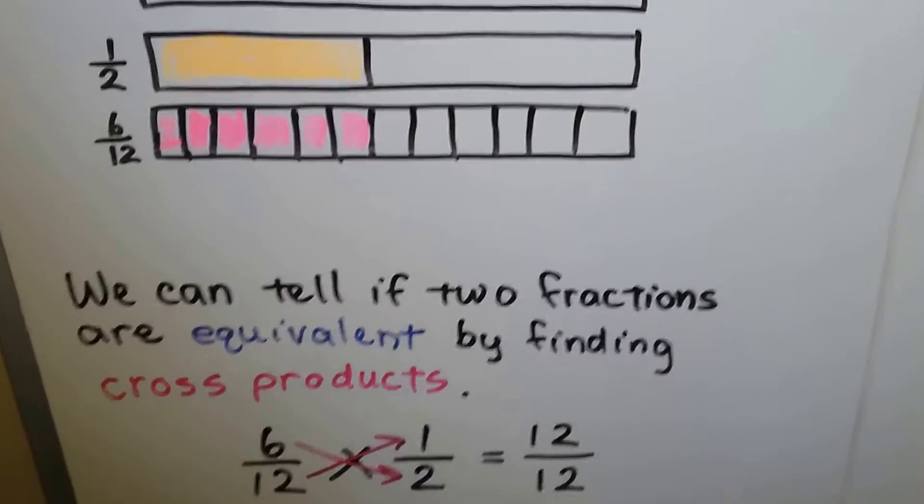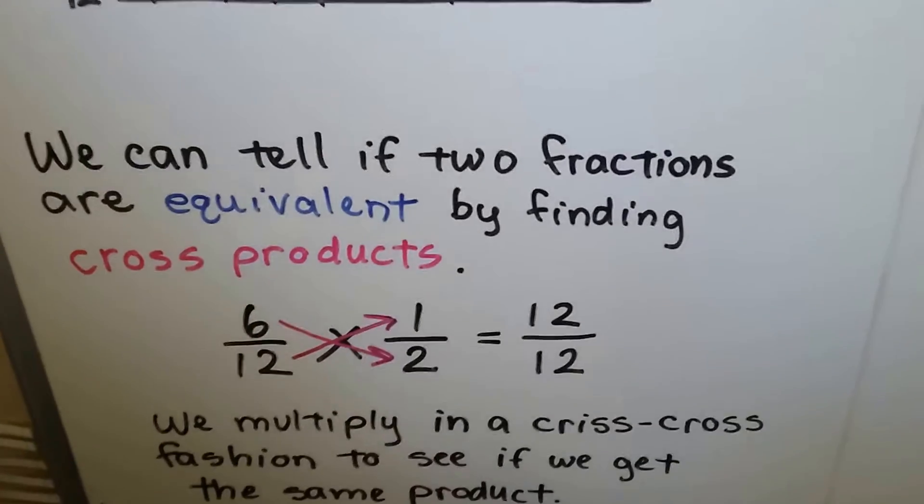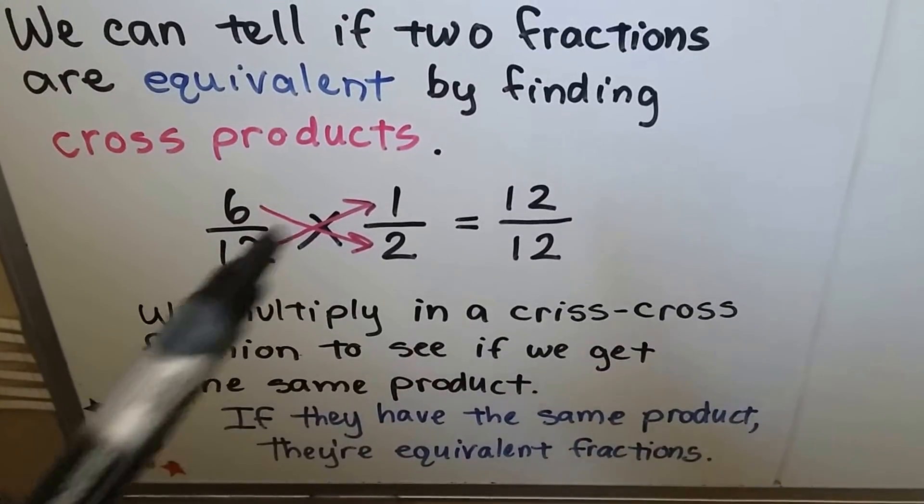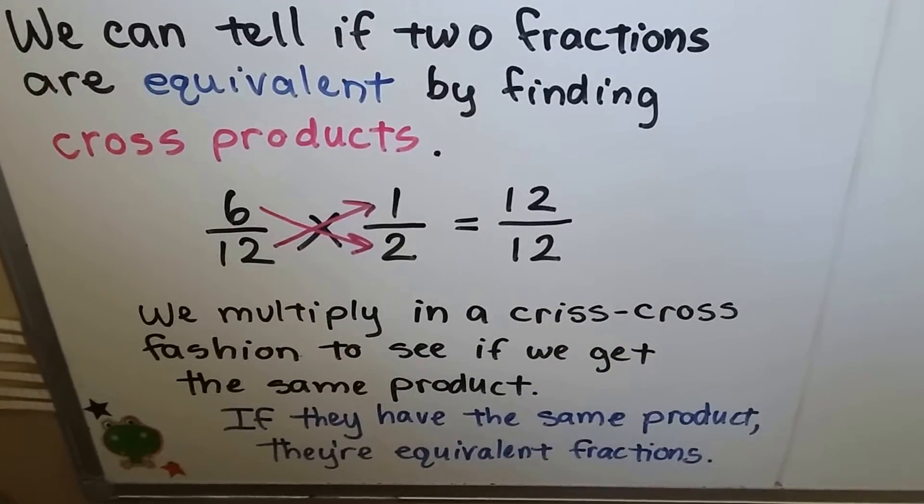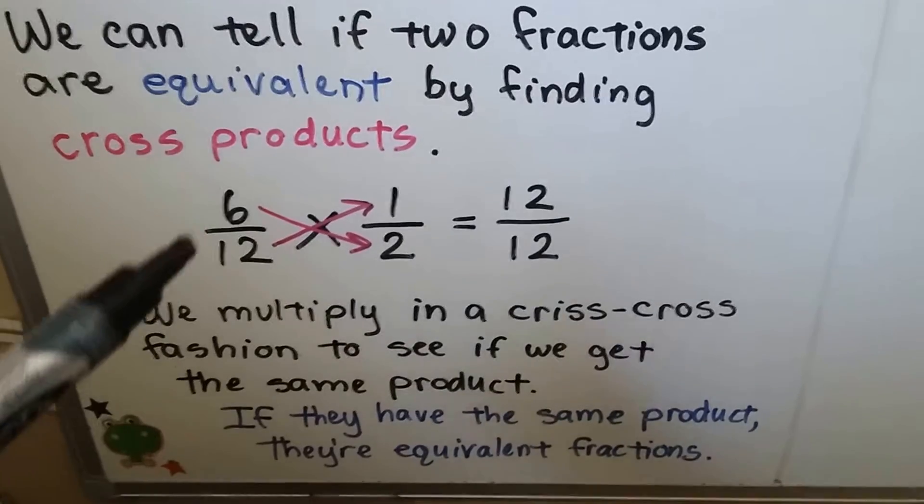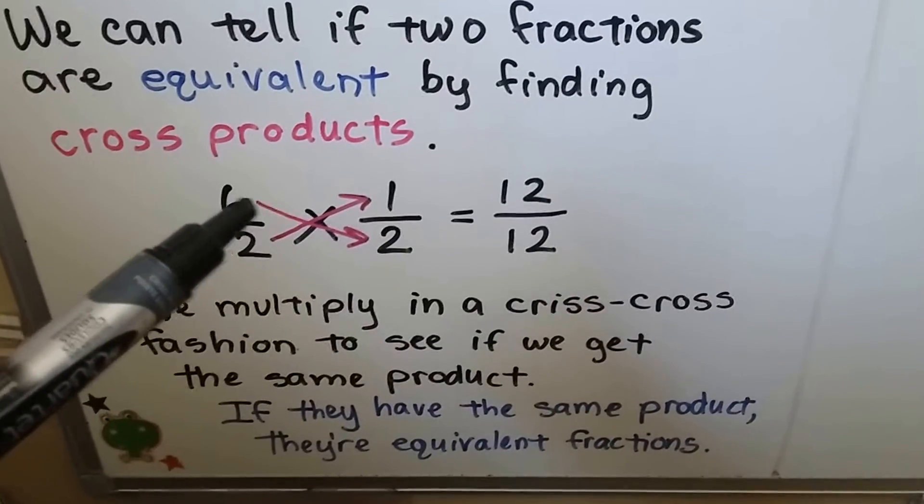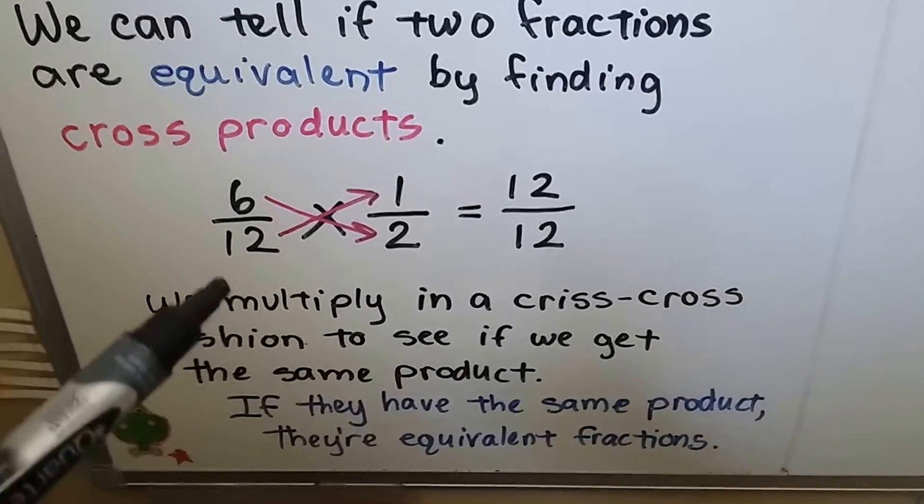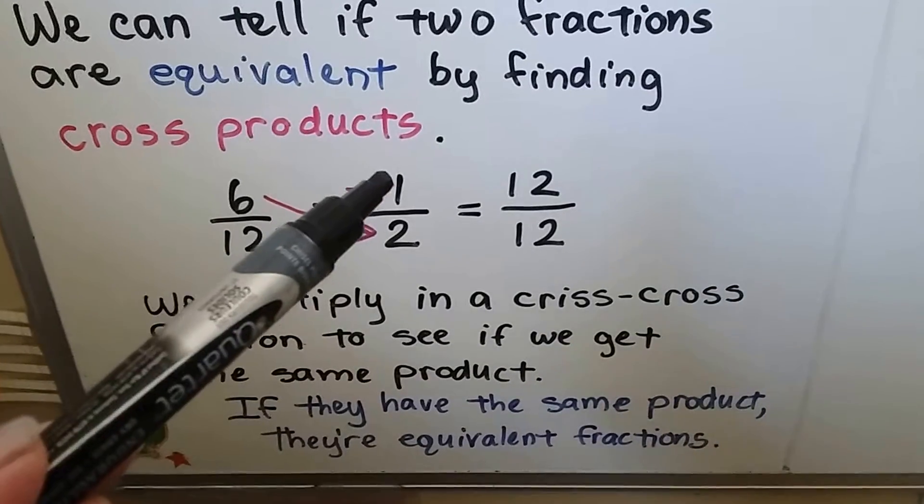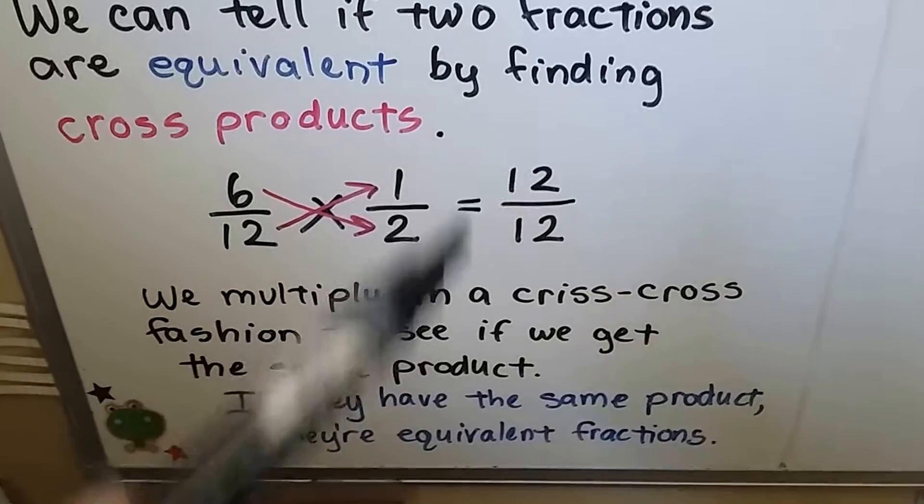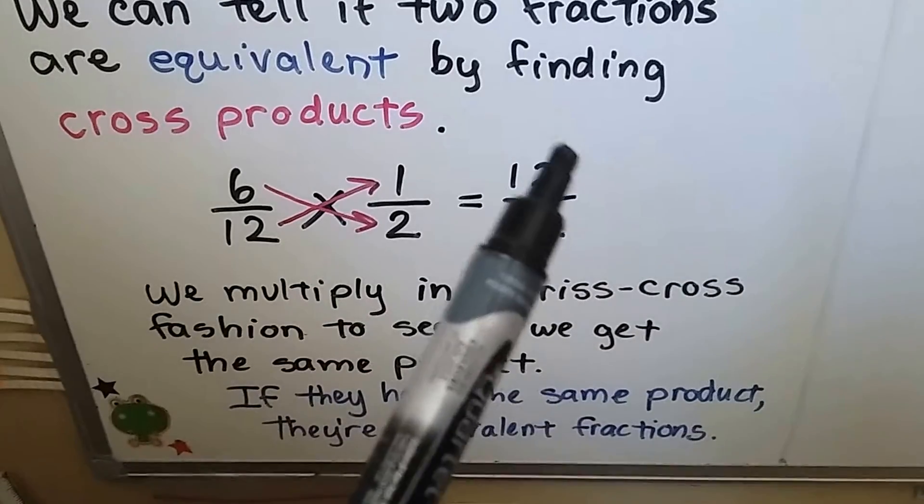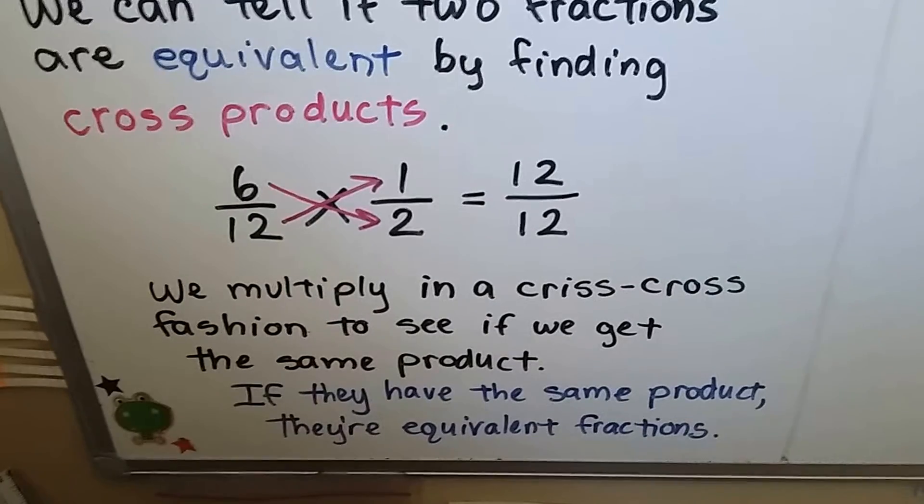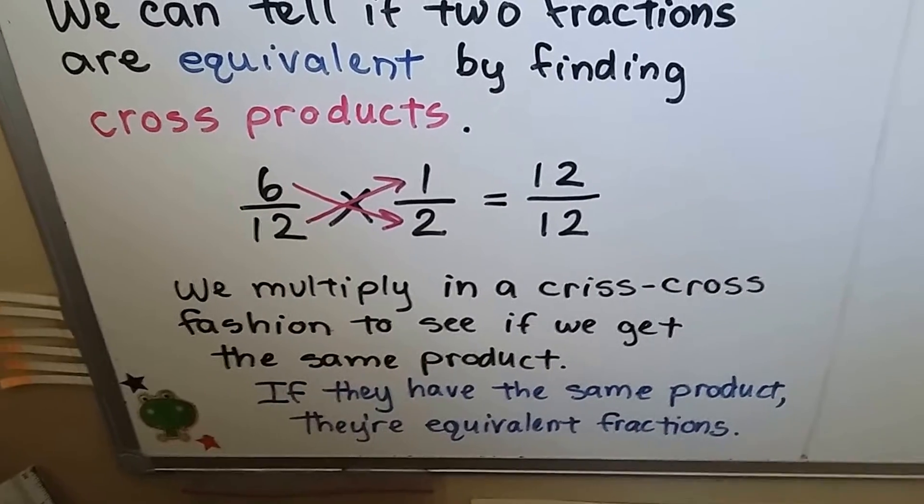And we can tell if two fractions are equivalent by finding cross products. We multiply in a criss-cross direction. We see if we get the same product. So this numerator six gets multiplied to this denominator two, and it equals twelve. Then this denominator twelve gets multiplied to that numerator one, and that's twelve. When we have the same product, we know they're equivalent fractions.